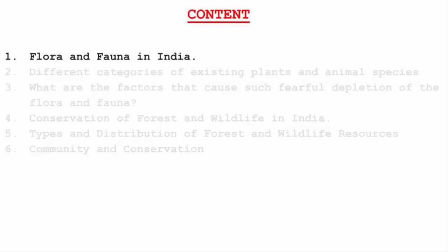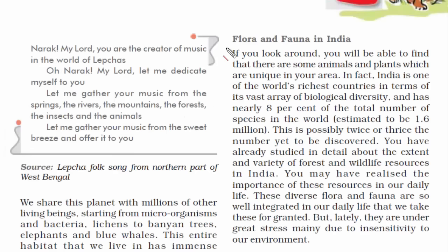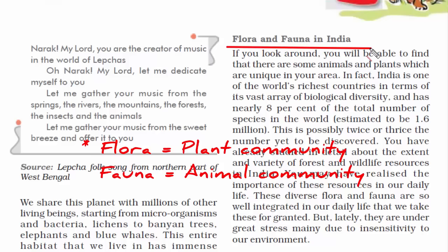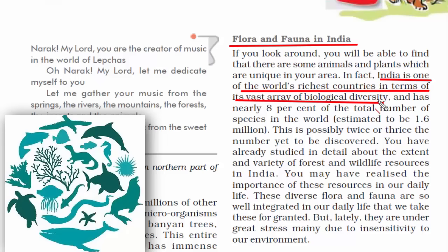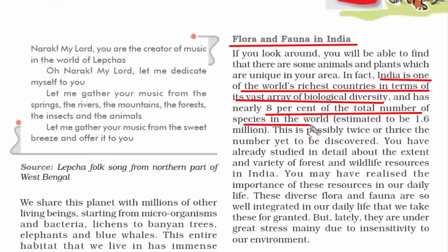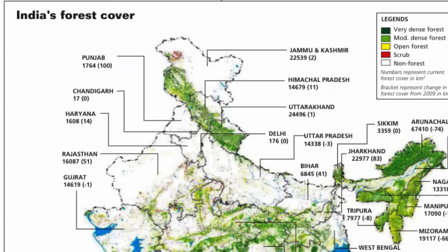The first topic is flora and fauna in India. Flora means plant community and fauna refers to animal community. India is one of the world's richest countries in terms of vast biological diversity, meaning we have various species of plants and animals. That's why 8% of the total number of species in the world is found in India, which directly proves that we have a variety of forest resources in India.